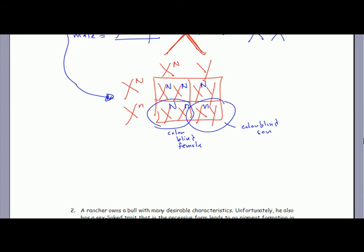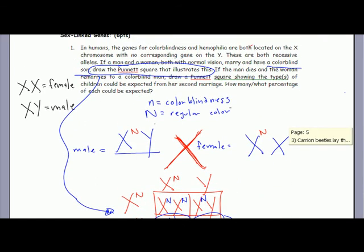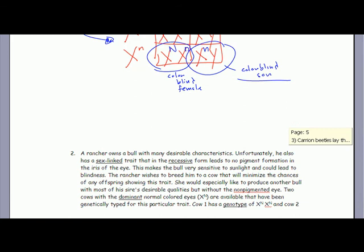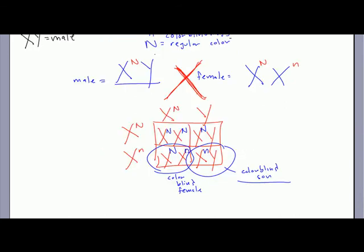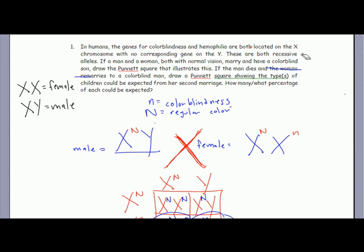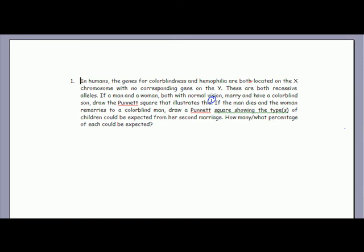In case you're confused, remember there is no corresponding allele on the Y chromosome. That's the result of the first cross. Draw the Punnett square that illustrates this - this is the answer. This is answered right here. Does that make sense? The colorblind son is right there.